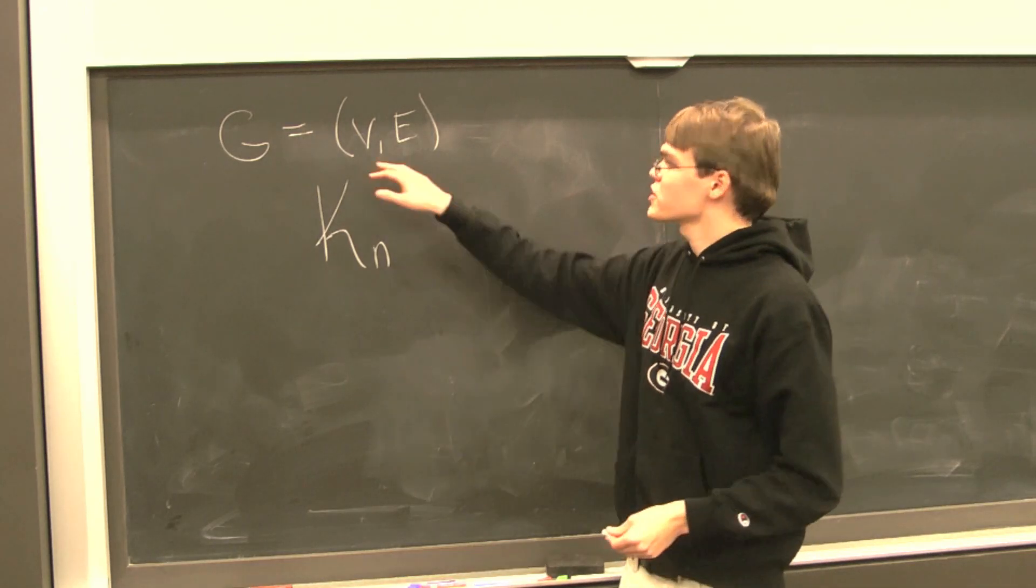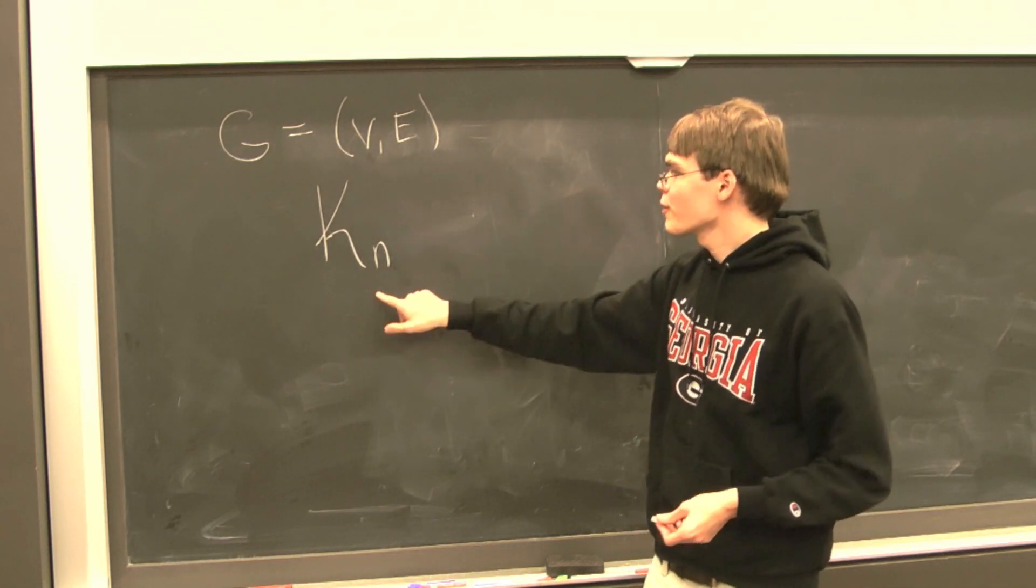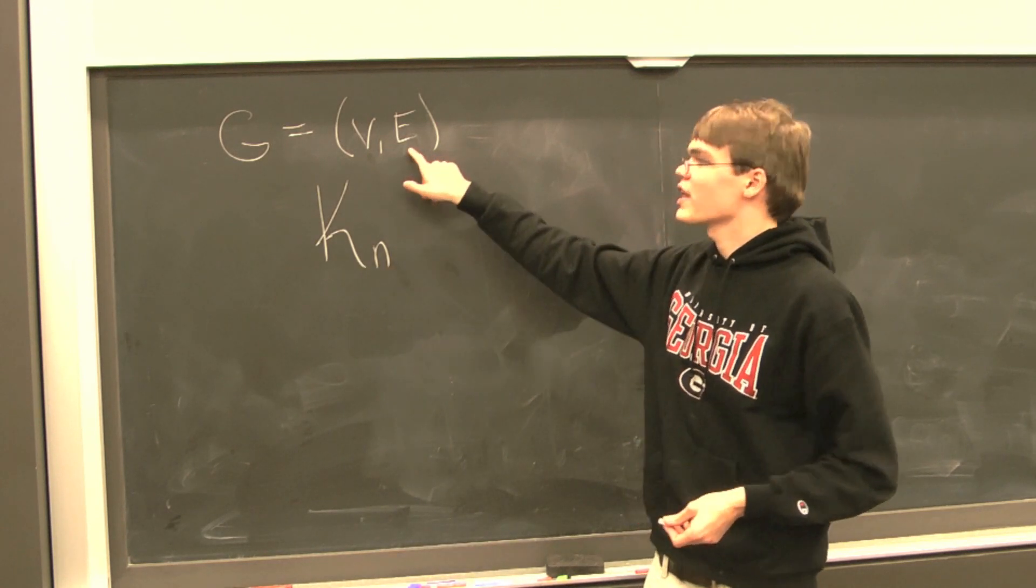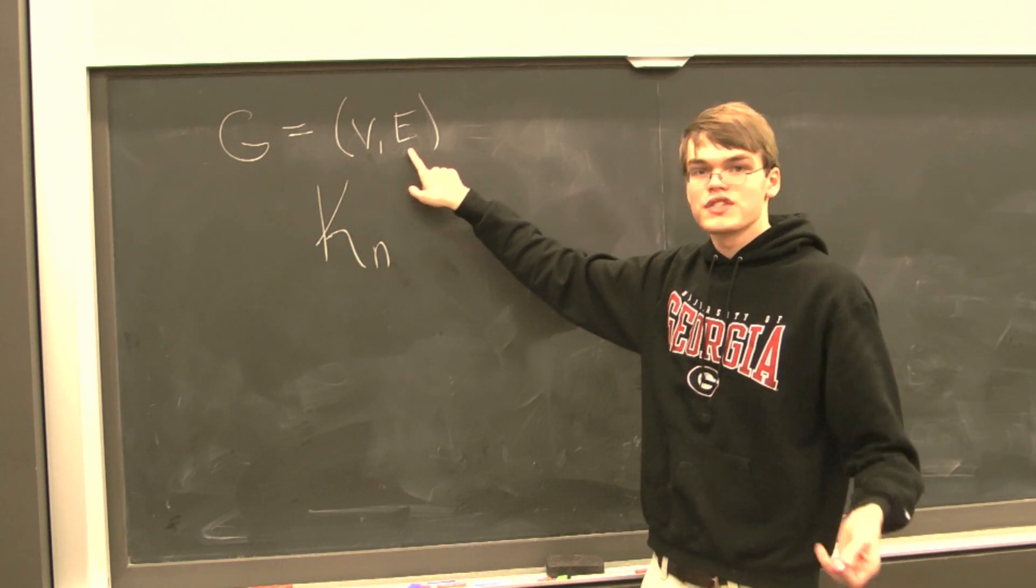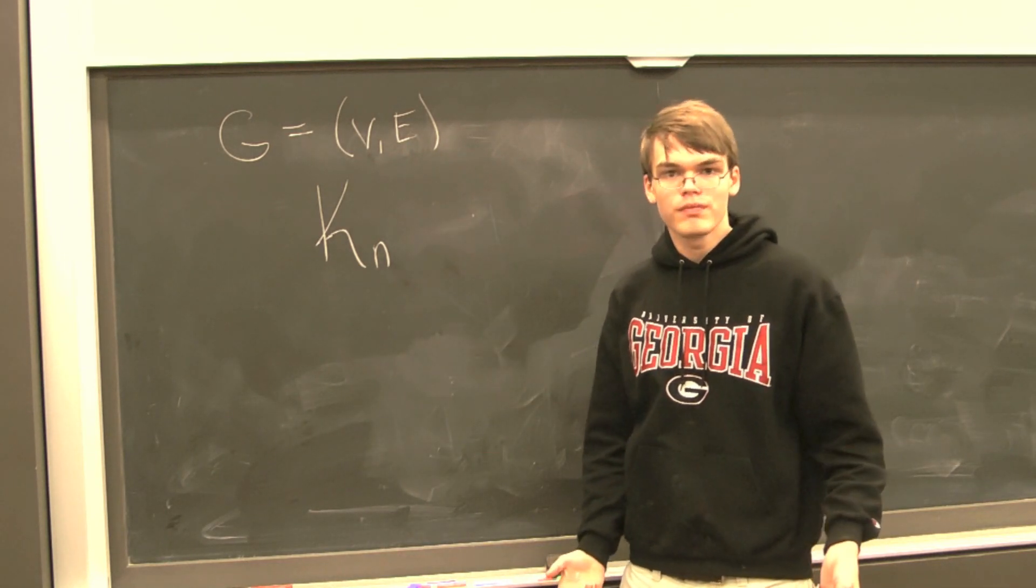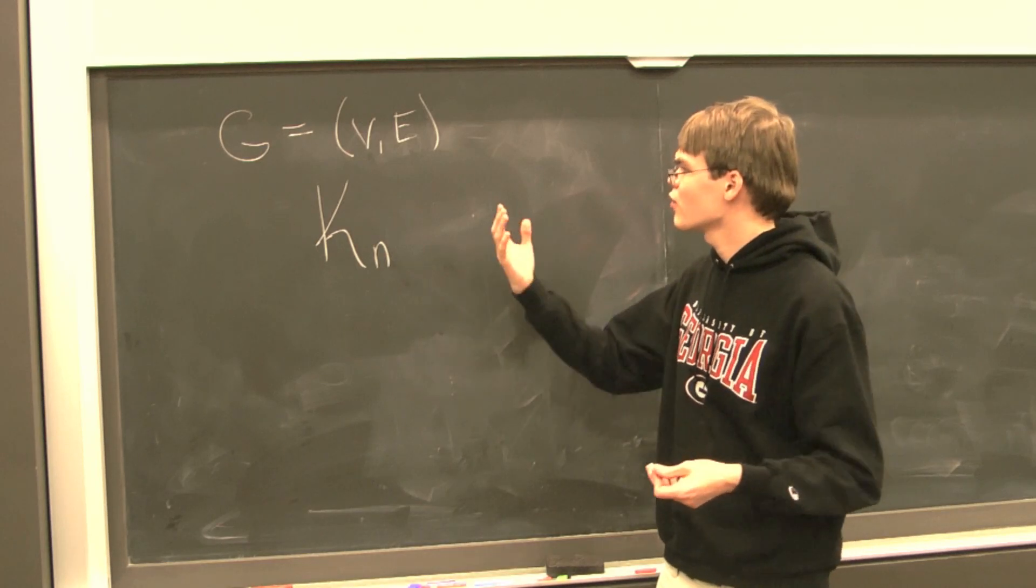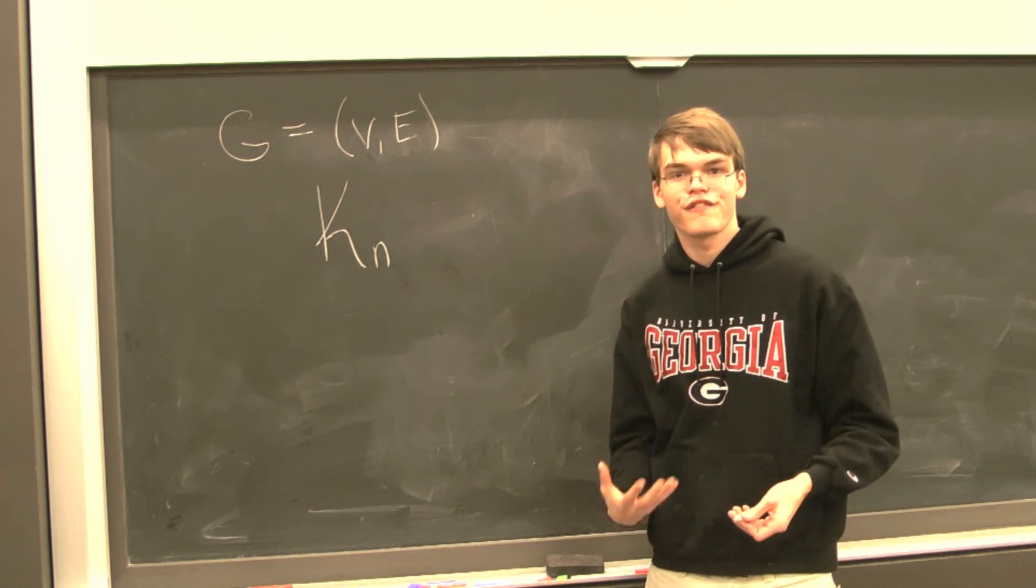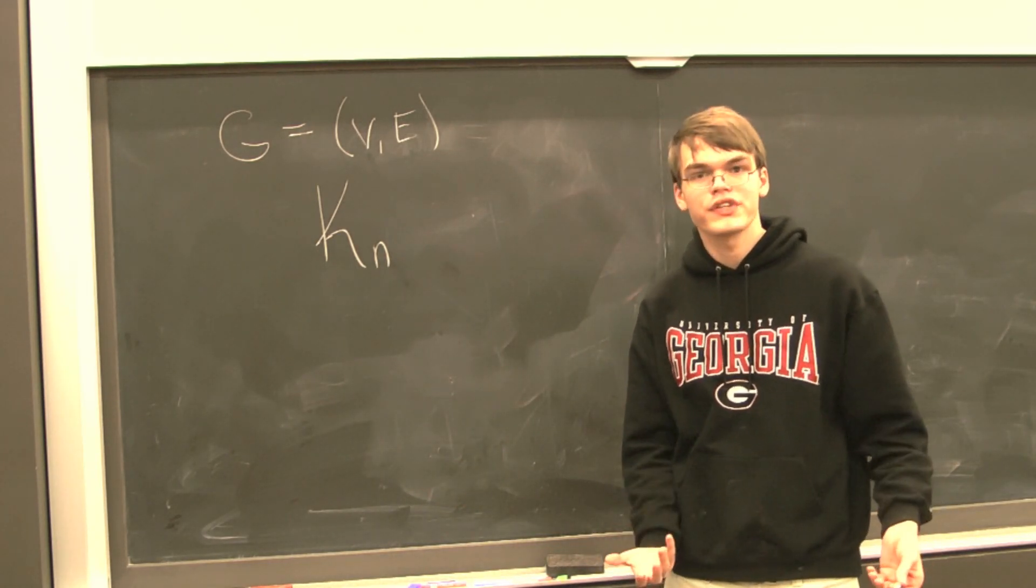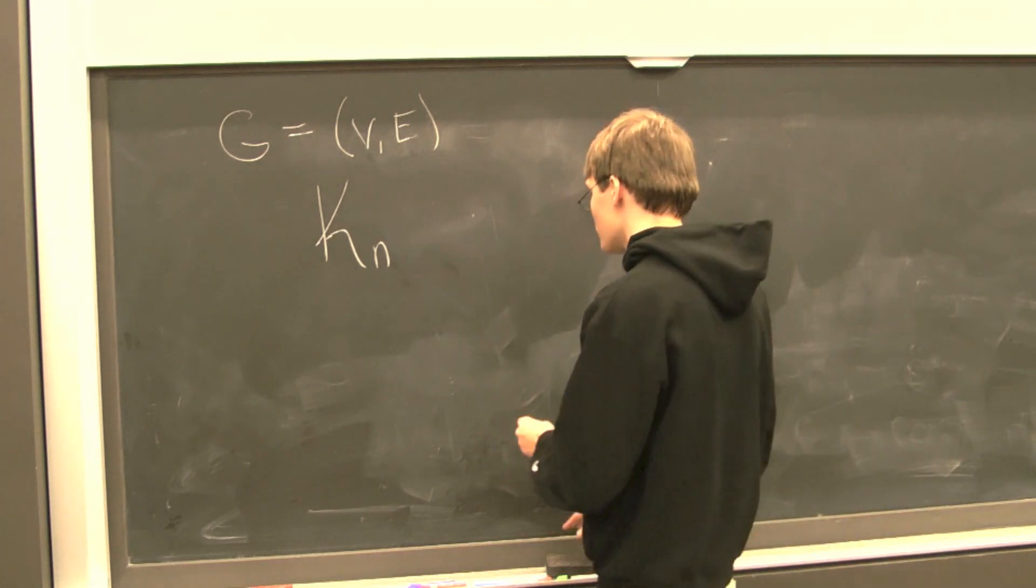We have n vertices in this set, but what's special about K_n is that within our set of edges, we have every possible pair of points. The best way to represent a complete graph visually is to arrange our n points in a circle.